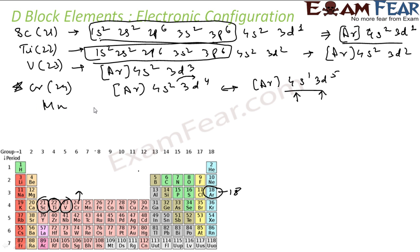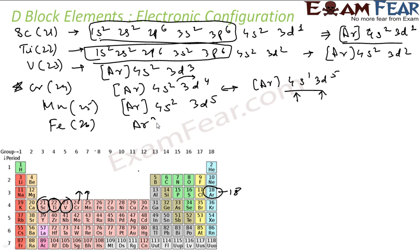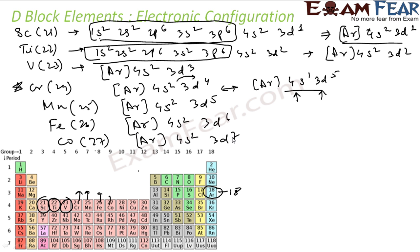Manganese (Mn), atomic number 25: Argon accounts for 18, 4s² adds 2 (total 20), and 3d⁵ adds 5 more — total 25. That is Manganese. Iron (Fe) is 26: Argon accounts for 18, 4s² gives 20, and 3d⁶ gives 26 electrons. Cobalt (Co) is 27: Argon for 18, 4s² for 20, and 3d⁷ gives 27 electrons.